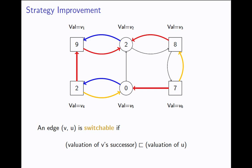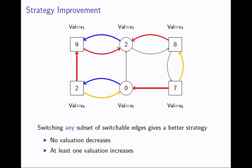The idea is you just look locally: can I locally switch this strategy at this vertex to get a higher valuation? Those are the switchable edges. The important property of strategy improvement is that if you switch any non-empty subset of switchable edges, you get a better strategy. If you pick any subset of switchable edges and switch them, you get a new strategy for player even; compute a new best response, update valuations, and none of the valuations decreased while at least one increased. This is how we climb up the totally ordered set of valuations — notionally improving the strategy.